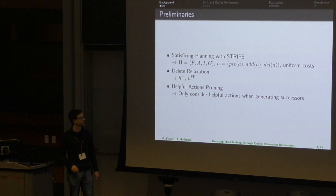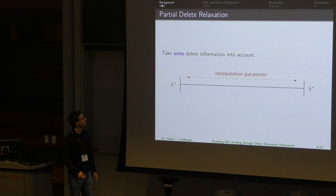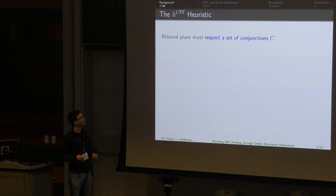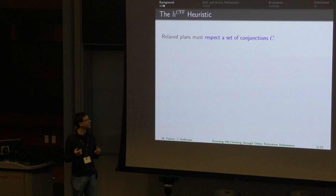Sometimes you want to take some delete information into account. There are partial delete relaxation heuristics with an interpolation parameter where you can choose the amount of delete relaxation. The heuristic we consider here is the H-CFF heuristic, where you do this with a set of conjunctions of facts, and these conjunctions must be respected by the partially relaxed plans.